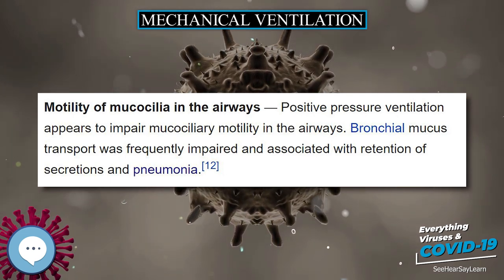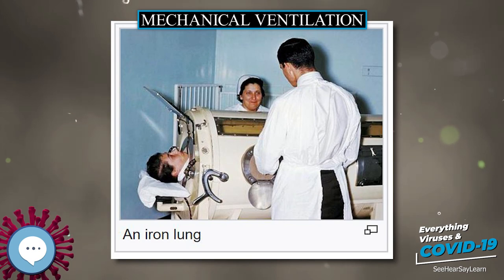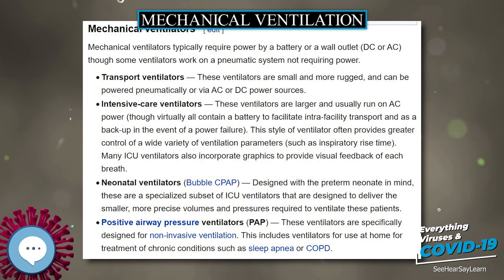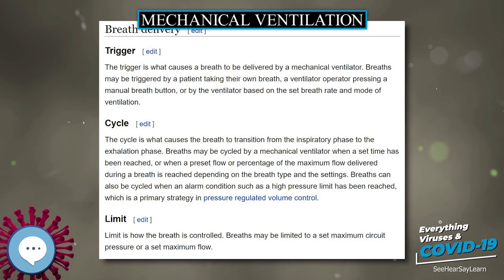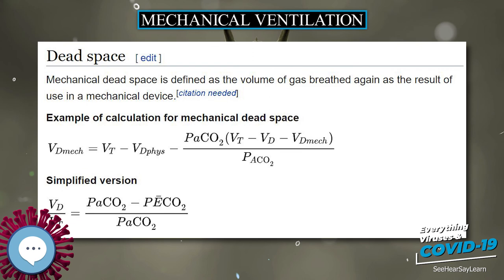The Greek physician Galen may have been the first to describe mechanical ventilation: 'If you take a dead animal and blow air through its larynx, you will fill its bronchi and watch its lungs attain the greatest distension.' Vesalius also describes ventilation by inserting a reed or cane into the trachea of animals. In 1908, George Poe demonstrated his mechanical respirator by asphyxiating dogs and seemingly bringing them back to life.